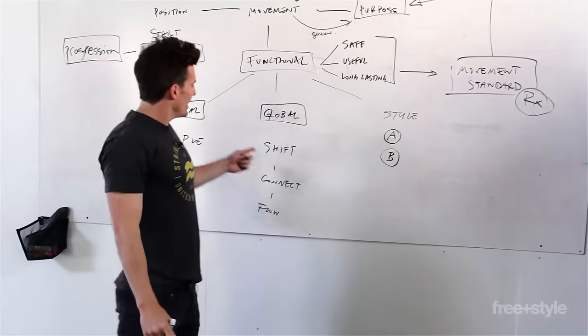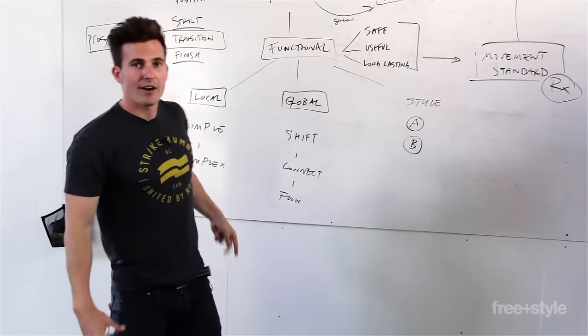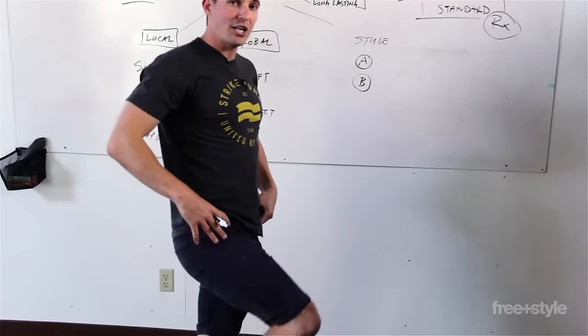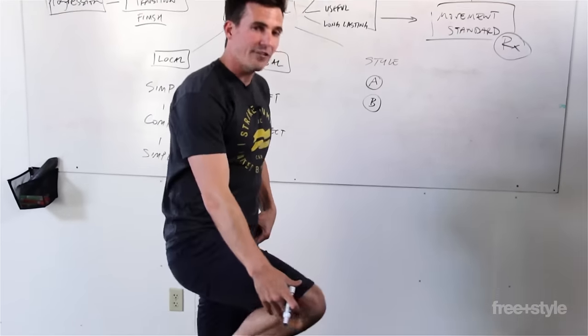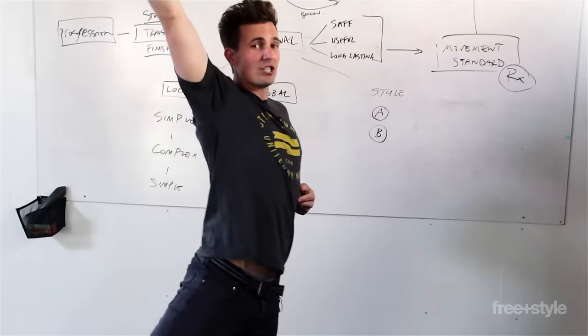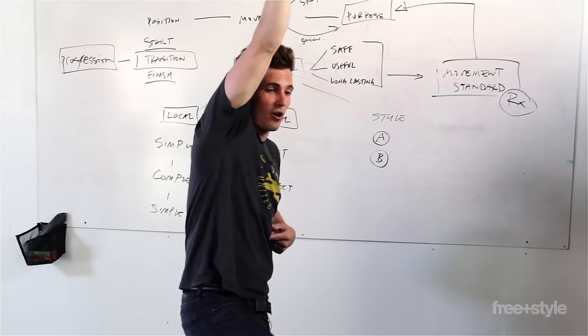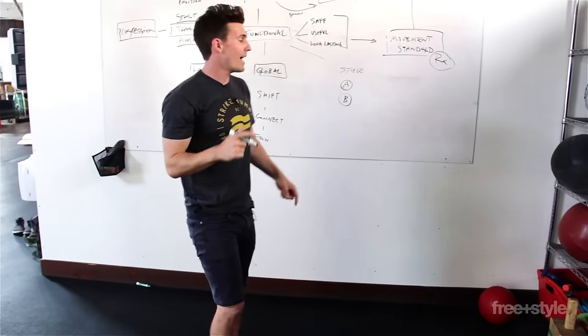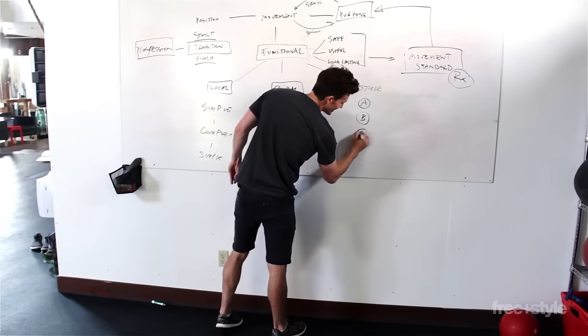Now I could even add more locally here. I can add maybe a hip flexion and a little kick, a little knee flexion and a kick. So now I'm not just kipping globally but I'm also adding a kick to that pull-up. That could be style C.